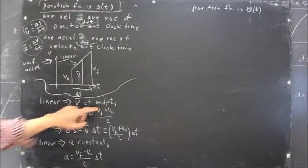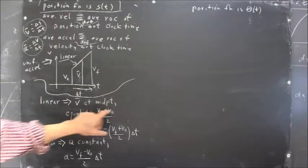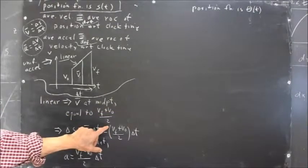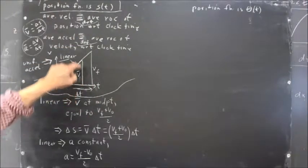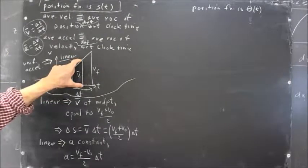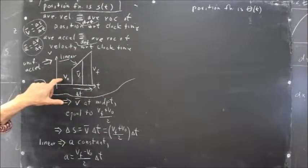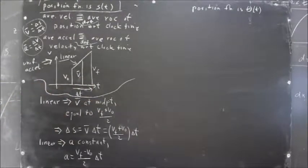So if the graph is linear, the average velocity occurs at the midpoint and is equal to the average of the initial and final velocities. Because if this is a straight line and you go to the midpoint and there's your average velocity, that distance here has to be equal to the average of the initial and final velocities.